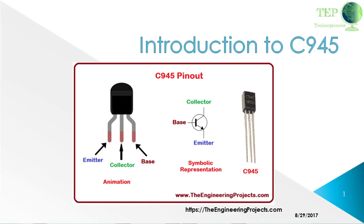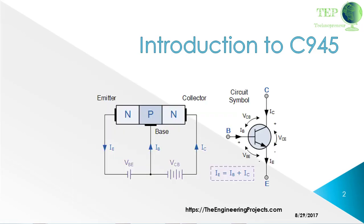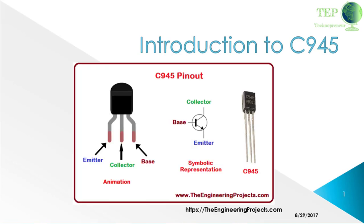C945 transistor is basically a negative-positive-negative, NPN, bipolar junction transistor. C945 is usually used in electronic circuits where there is a need of a high-speed transistor and a low current. C945 has three semiconductor regions named as emitter, base and collector respectively. Since C945 is a bipolar junction transistor, its base is doped with a positive or P-type semiconducting material.